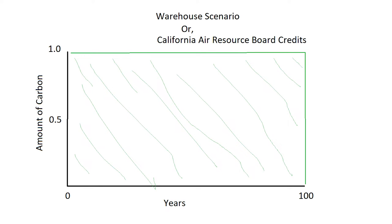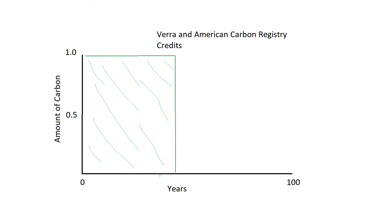This is how a lot of carbon credits work today. California Air Resources Board credits, the vast majority of Climate Action Reserve credits — they all work this way. You may notice that other project types, like VERA projects and American Carbon Registry projects, are only 30 to 40 years long. This is actually what is happening with VERA credits — it's essentially locking those credits up in the forest, not a warehouse, and keeping them secure for a fixed duration of 40 years.